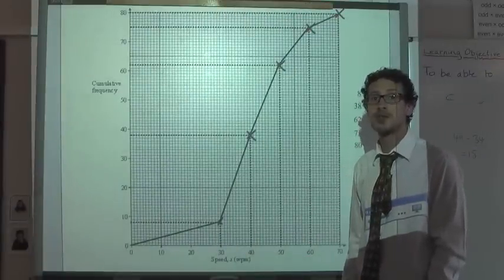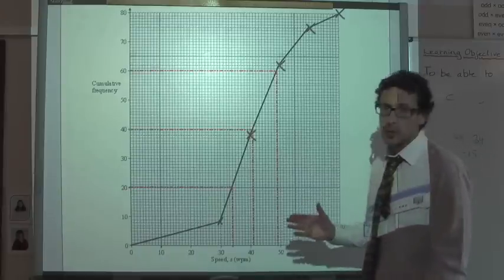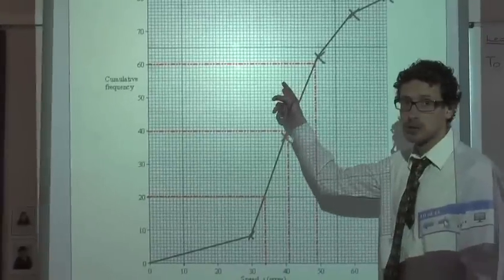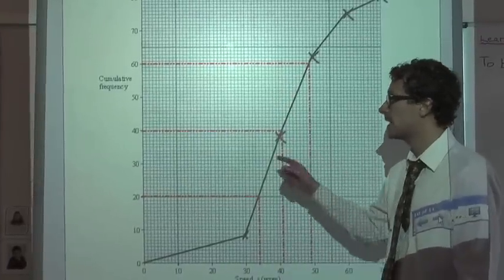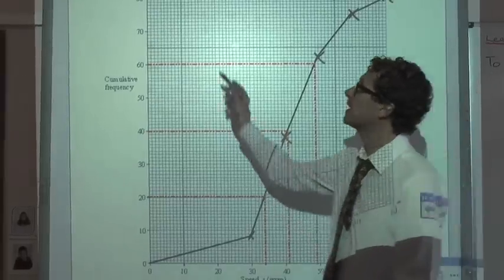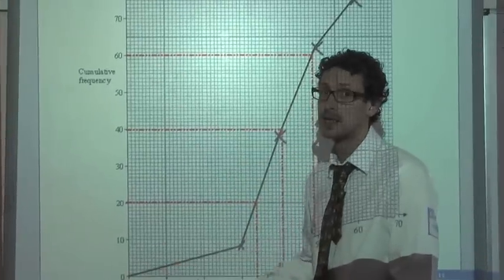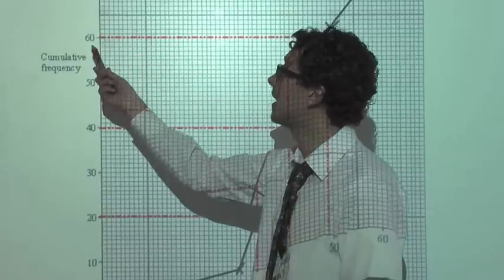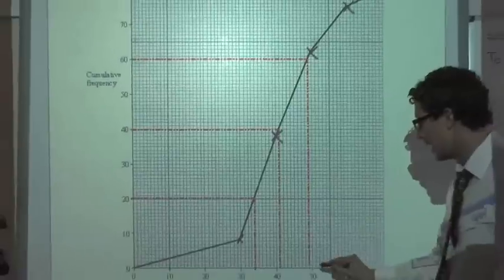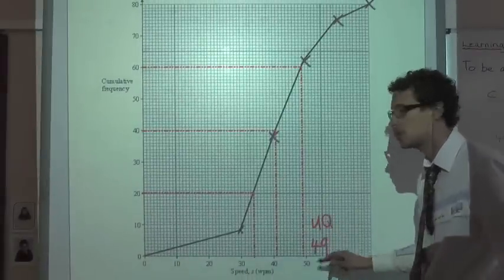The next part of the question asks us to use the graph to find the interquartile range. For the interquartile range, we need to find the lower quartile, the upper quartile, and in this example I've also found the median. For the upper quartile, I need three quarters of the way up the cumulative frequency data — three quarters of 80 is 60 — so we read along to our line, down from our line, and the upper quartile (UQ) is equal to 49.